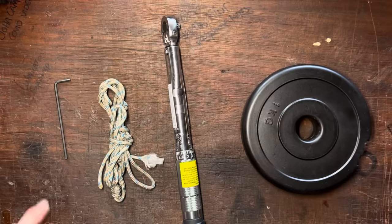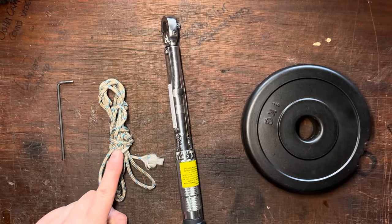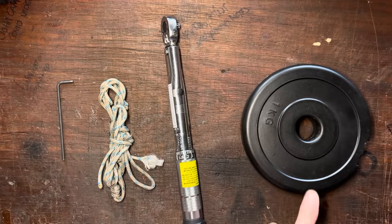We need four things: an allen key, some rope, of course our torque wrench, and weight.